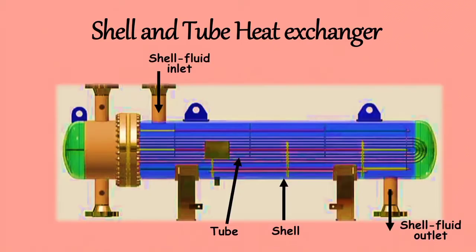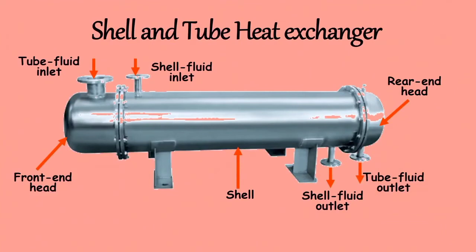The next component is the front end head and rear end head. These are used for the entrance and exit of the tube fluid. The front end head is stationary, while the rear end head could be either stationary or floating, depending on the thermal stresses between the tubes and shell. The selection criteria for the front end head are mostly based on cost of the heat exchanger, maintenance and inspection, hazard due to mixing of shell and tube fluids, and leakage to ambient and operating pressures.